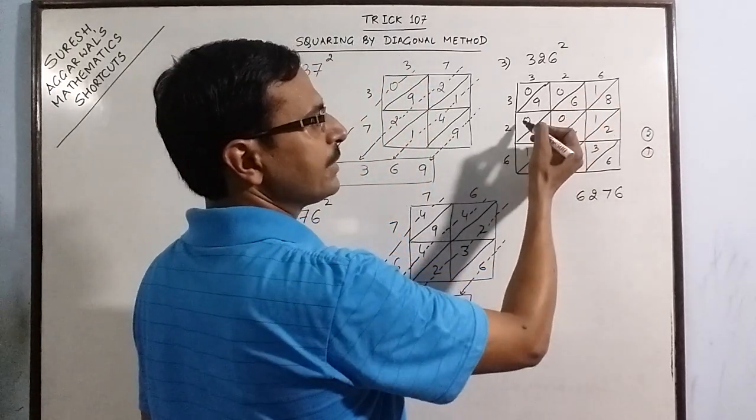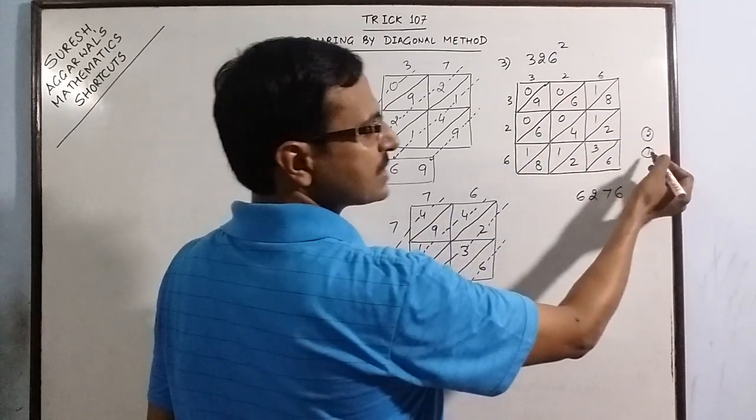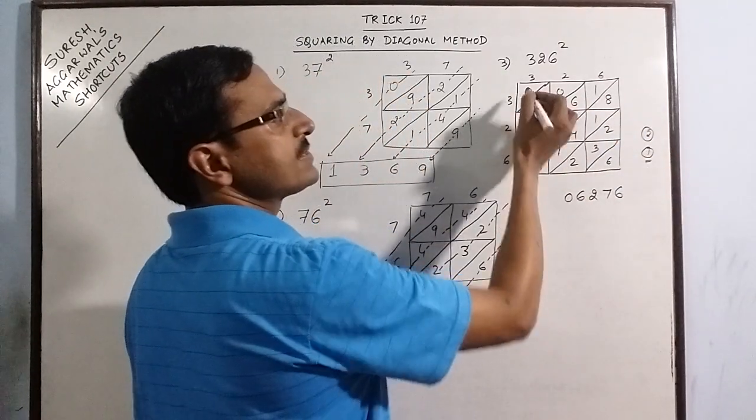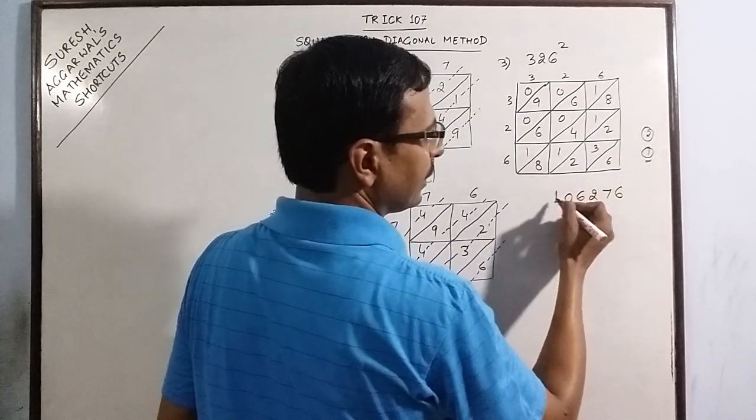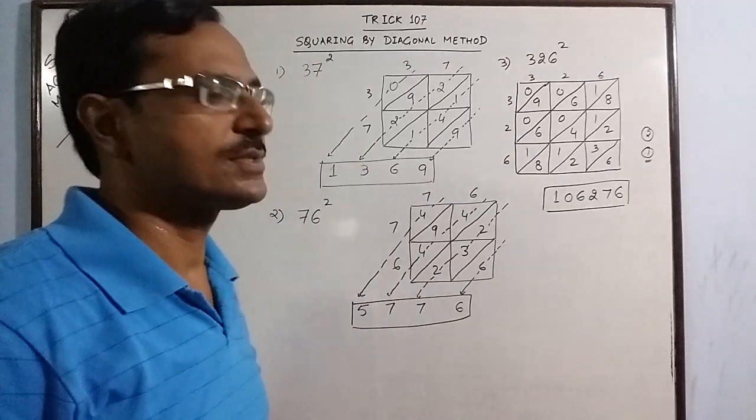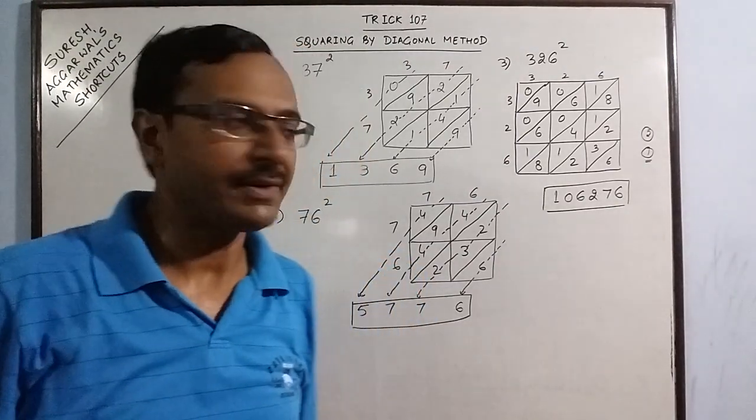Next you have 3 numbers. 2 are 0. So 9 plus 1, 10. 0 1 carry again. And last is 0. So 1. So the square of 326 is 106276.